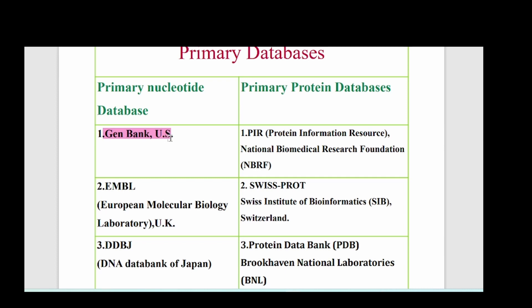Primary nucleic acid databases include: GenBank (US), EMBL — European Molecular Biology Laboratory (UK), and DDBJ — DNA Data Bank of Japan. These three are the main primary nucleic acid databases.